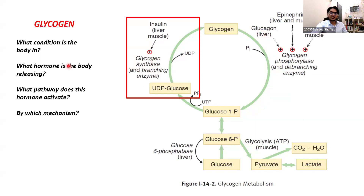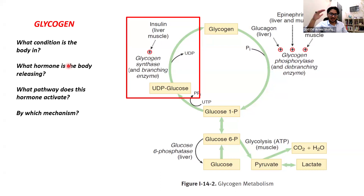So these four questions — what condition is the body in, what hormones are present, how are these hormones active, and what pathways are these hormones activating and by which mechanisms (phosphorylation, dephosphorylation, or at the gene level) — these four questions help you understand any metabolic pathway.